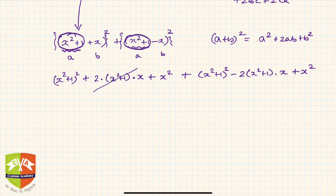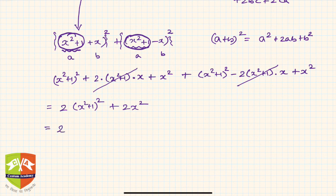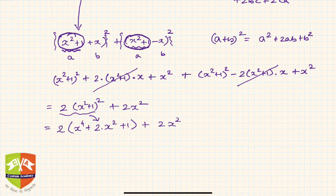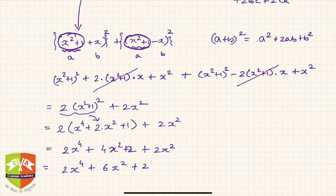The middle terms 2(x²+1)x and -2(x²+1)x cancel out. What remains is 2(x²+1)² + 2x². Expanding further: 2(x⁴ + 2x² + 1) + 2x² = 2x⁴ + 4x² + 2 + 2x², and collecting like terms gives 2x⁴ + 6x² + 2.